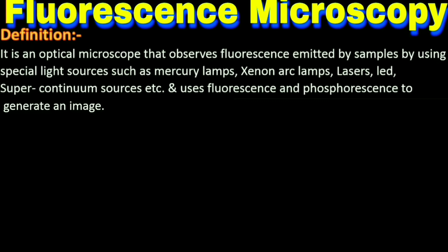It is an optical microscope. We have already discussed in the second lecture video the different types of microscopic techniques. Fluorescence microscopy comes under the optical microscope because we are using a light source in this microscope. We should keep in mind it comes under the optical microscope, not the electron microscope, because the light source is used. It is an optical microscope that observes fluorescence emitted by a sample.